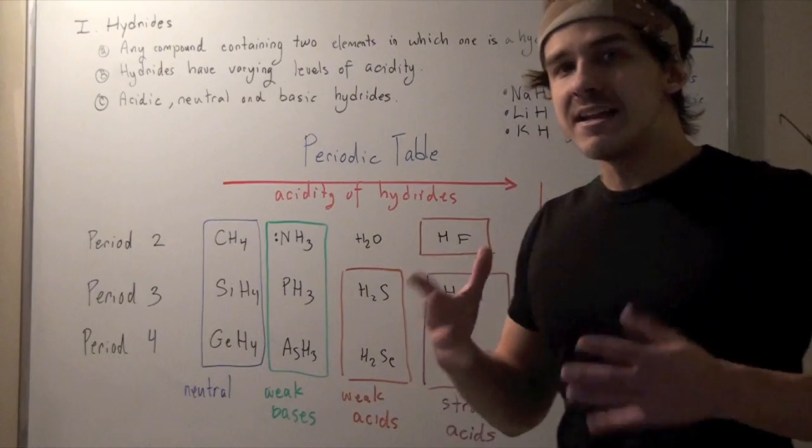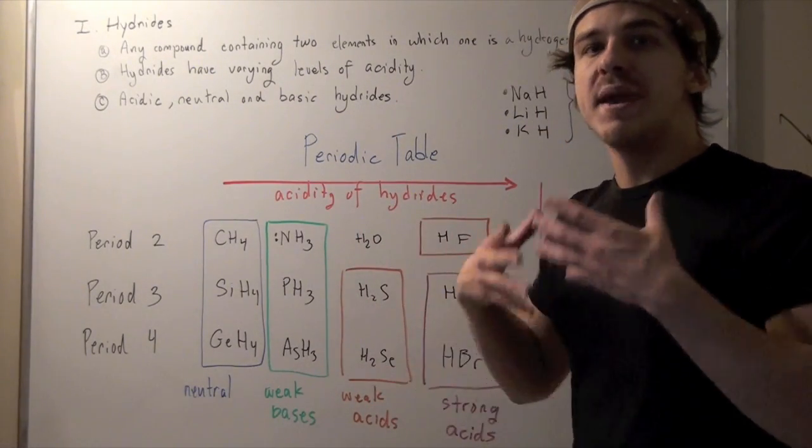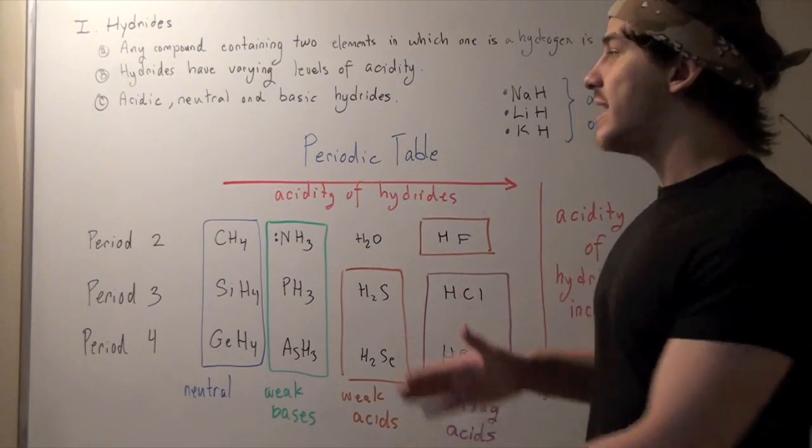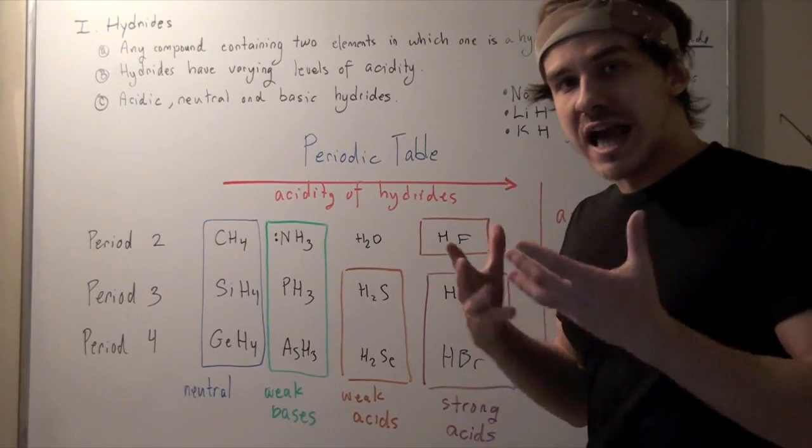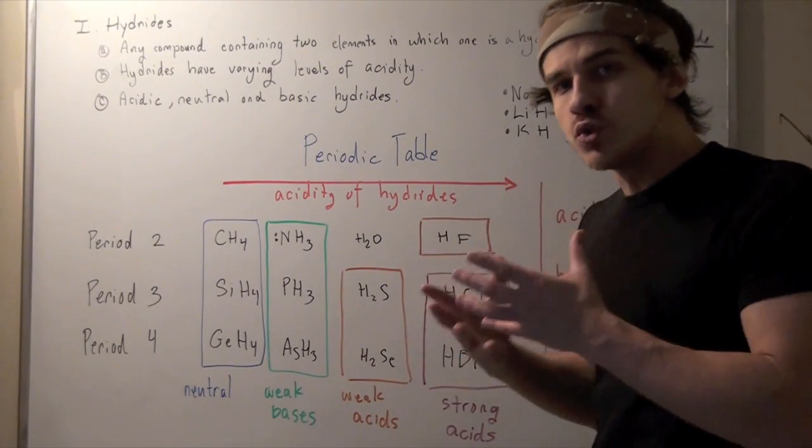That means atoms that exist on the left side of the period form basic hydrides. Atoms that exist in the middle, the transition metals, form either neutral or basic hydrides.